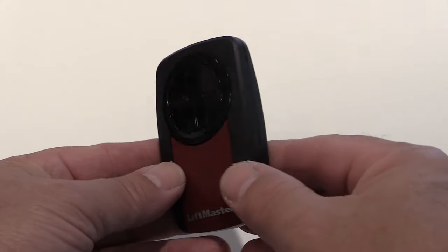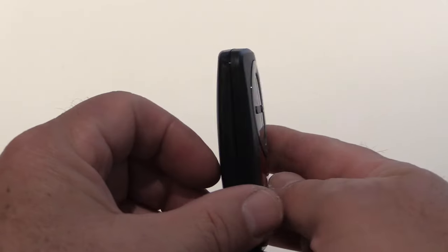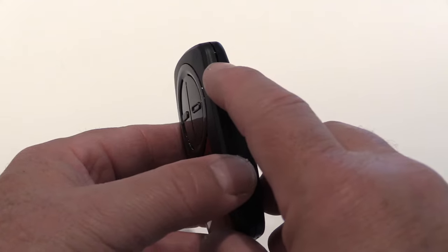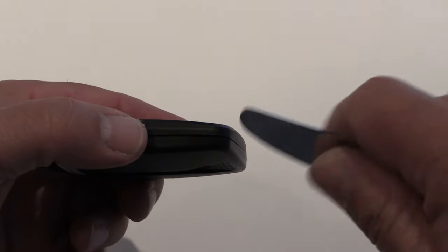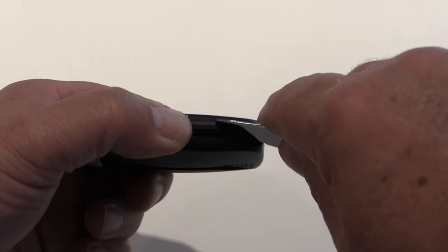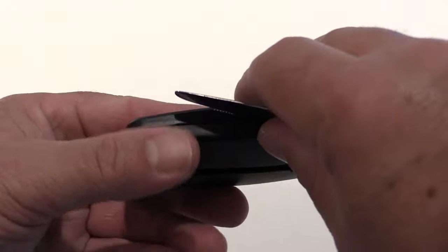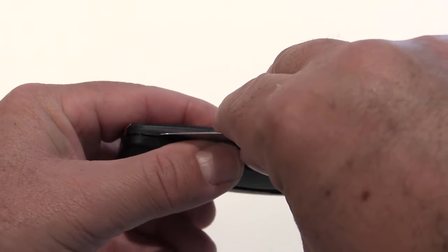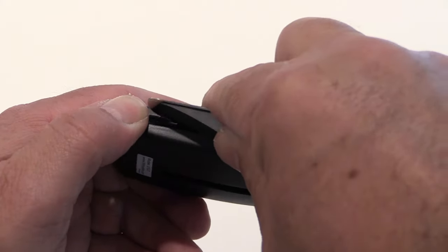Of course the remote control comes with a battery, but in the event that you need to change it, if you look at the sides of the remote control, you'll see a slit. On the right side, it's a little bit wider. If you take a butter knife or a screwdriver and you put it in the slot and give a little twist, it'll pop the case right open.